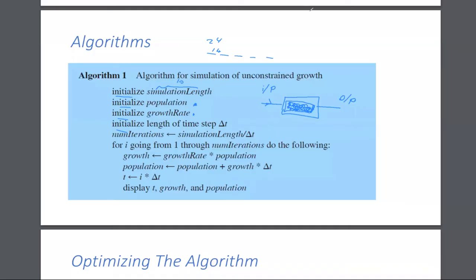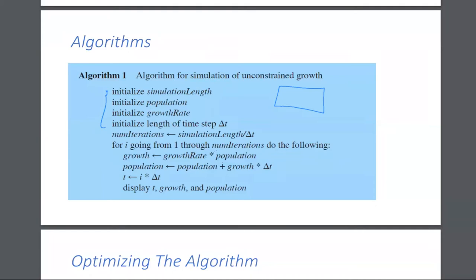So what you do here is you have initial values — initializing things — and then you process something here. This process is the one usually dealing with the equations. It says the growth is equal to the growth rate multiplied by the population. In other words, this line right here is the one we learned: dp/dt is equal to rate multiplied by the population. It's the same equation right here.